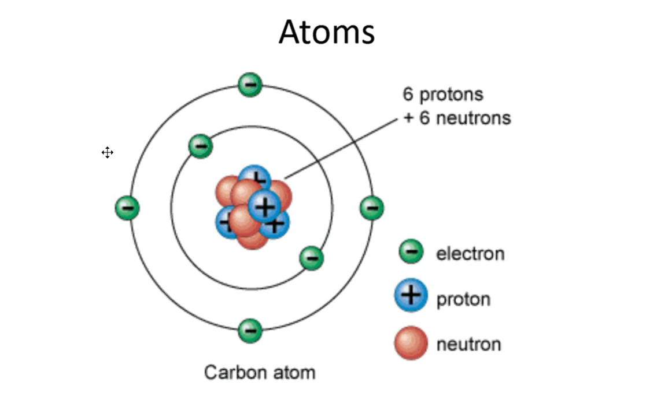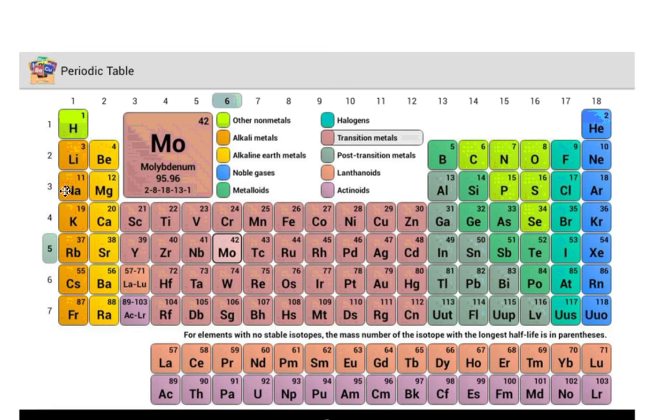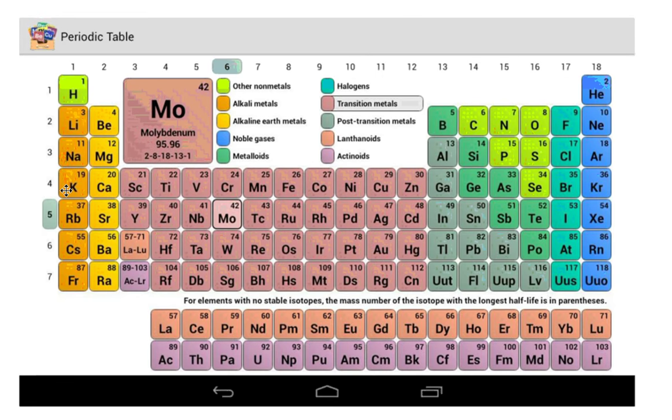What is an atom? An atom is the basic unit of matter. It is made up of subatomic particles: electrons, which are negatively charged, protons, positively charged, and neutrons, which have no charge.